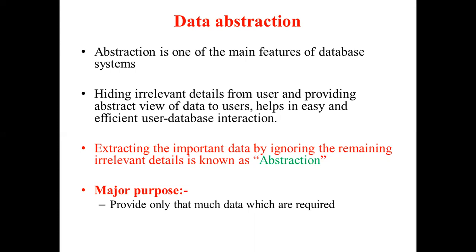For example, if I am creating a database for a banking system, then as an account holder, I just want information about what my balance is and what transactions have been carried out. How it is implemented on the backend is totally not important to the user. So, hiding all this and presenting only the important data as per the requirement of the user — by hiding irrelevant or unwanted data — is nothing but called data abstraction.